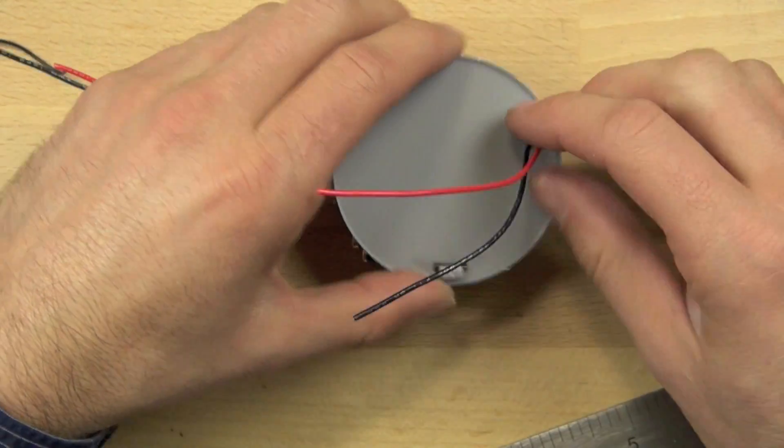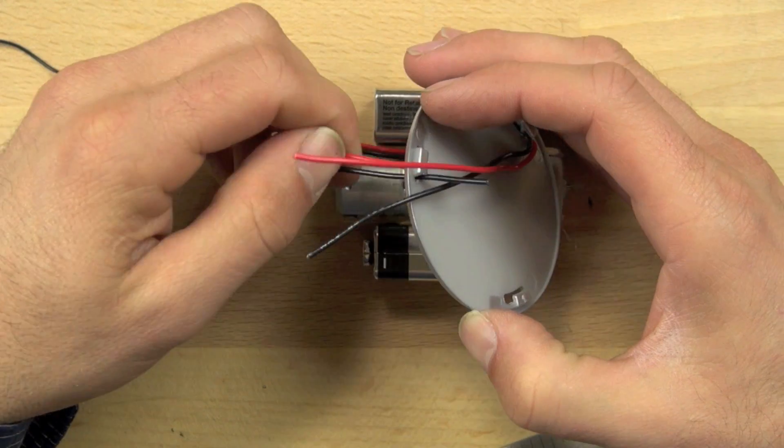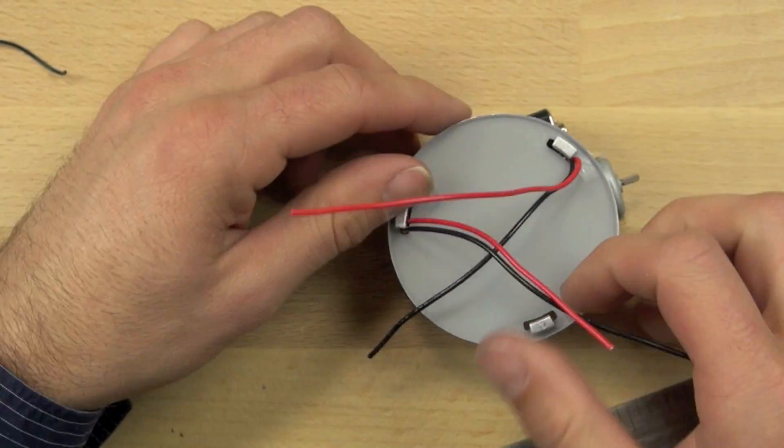It's important that we line up those holes. You can see there are three holes on the tap light. We want to make sure we line those wires up with those holes and pull the wires through.